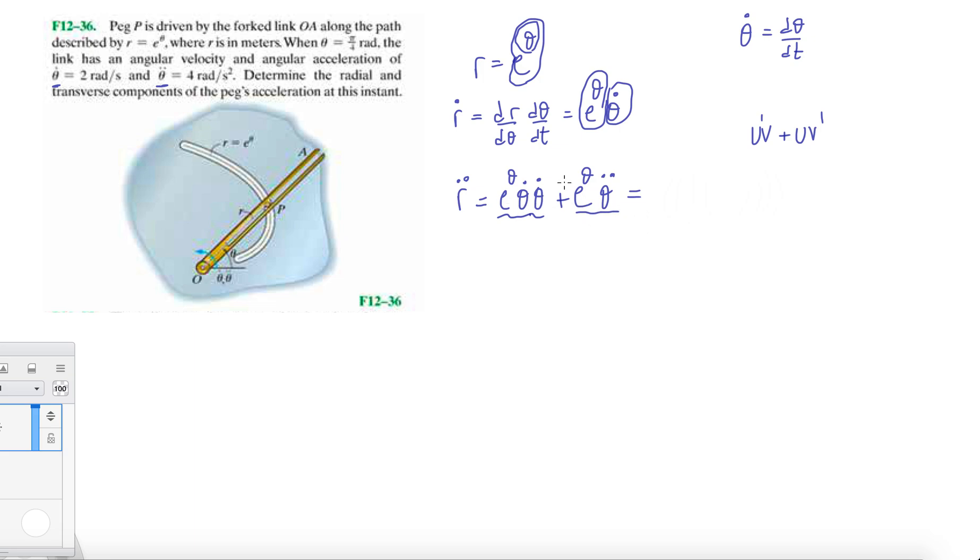We're pretty much home free here. It's gonna be e^θ times theta dot squared plus theta double dot times e^θ, which is (theta dot squared plus theta double dot) times e^θ. Now we just gotta plug in numbers. They give us pi over 4 radians, so at theta equals pi over 4, we gotta calculate the radial and transverse component of the peg's acceleration.